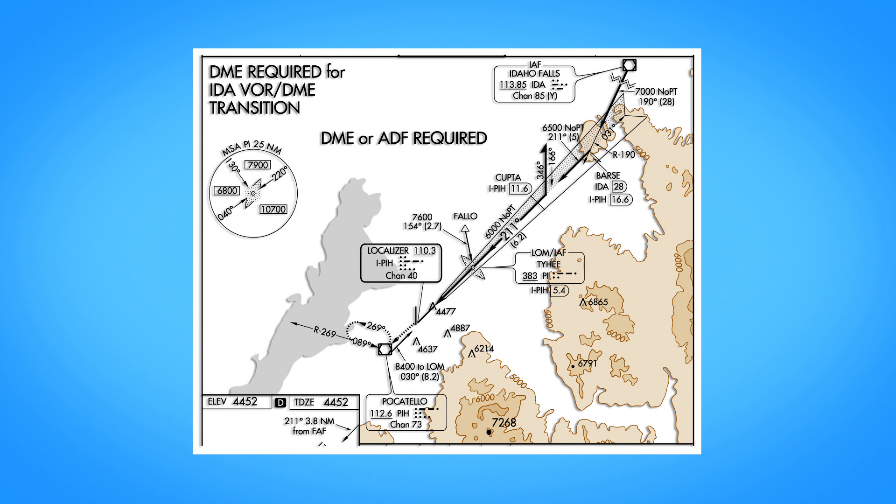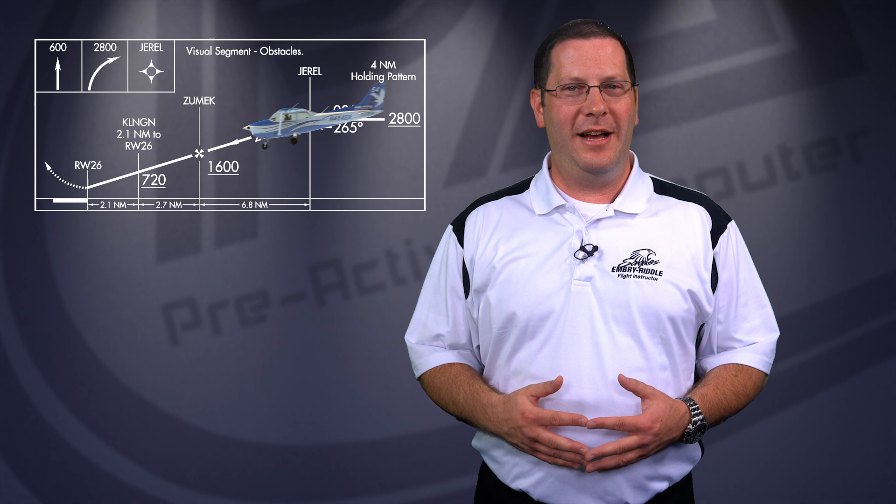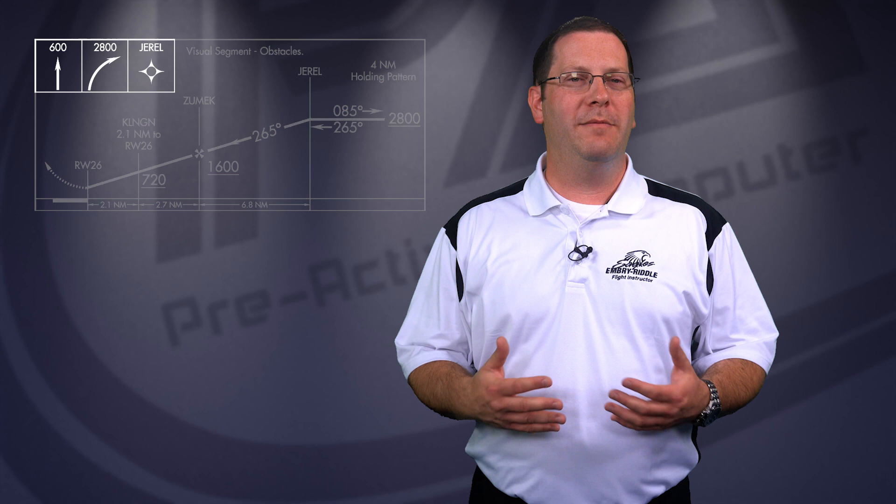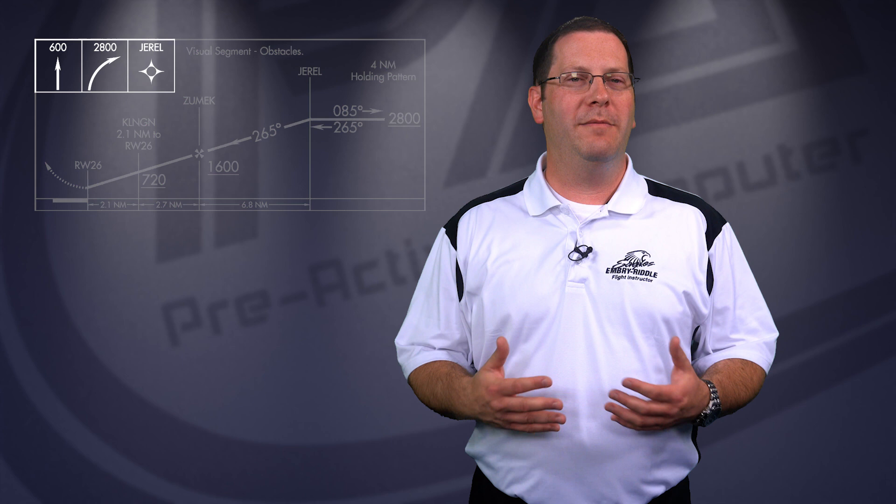The profile view is a side view of the approach used to help visualize the descent profile. It also contains a pictographic representation of the missed approach procedure for quick reference. By viewing the approach path from the side, we can easily see the required altitudes, step-down fixes, final approach points, the missed approach point, distances, the course, and any other notes regarding the descent.